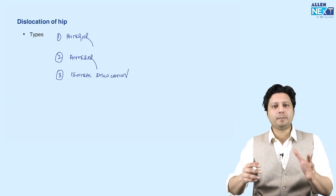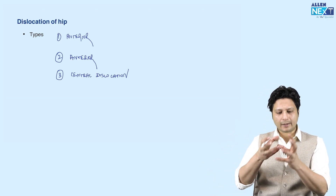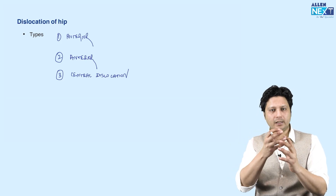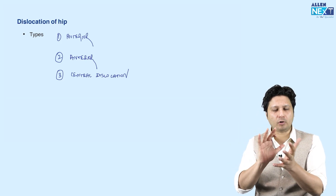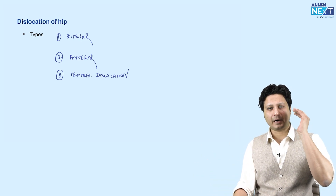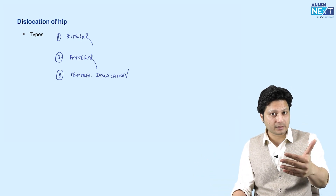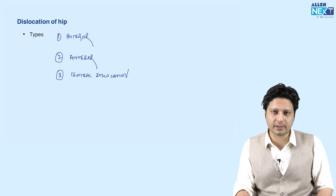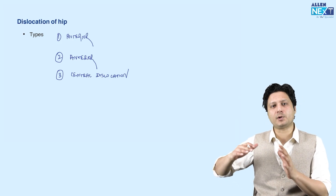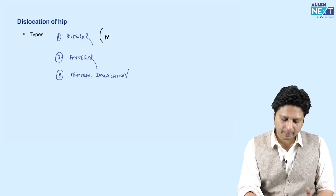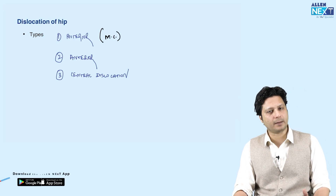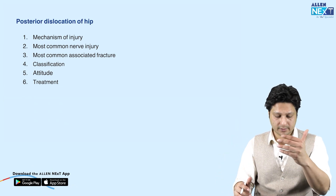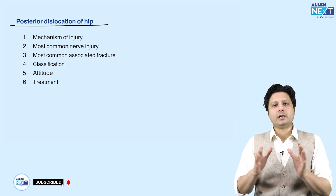These are the three basic types of dislocations — the head of the femur can be dislocated anteriorly, posteriorly, or centrally, with slight variations also existing. As far as examinations are concerned, these are the important dislocations you should be aware of in order to manage the condition immediately. Out of these three types, the most common one is the posterior dislocation of the hip joint.